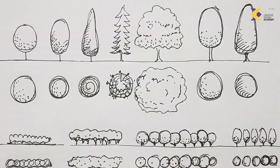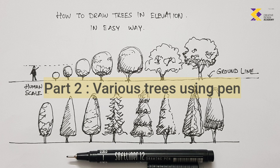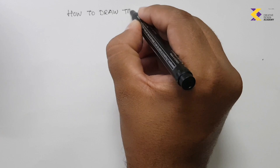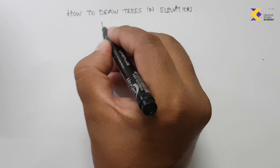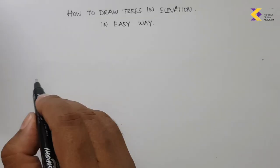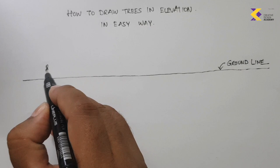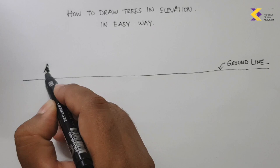This is part one — hope you like it, take a screenshot and practice. Moving on to the next series: drawing various trees using a pen. Even here we ensure trees are made in proportion. We make a ground line and then draw a human scale figure, which is very important for context — to understand the size of the tree relative to the human figure.